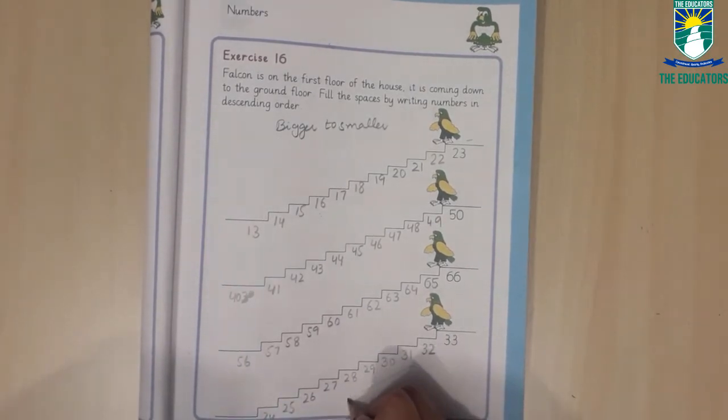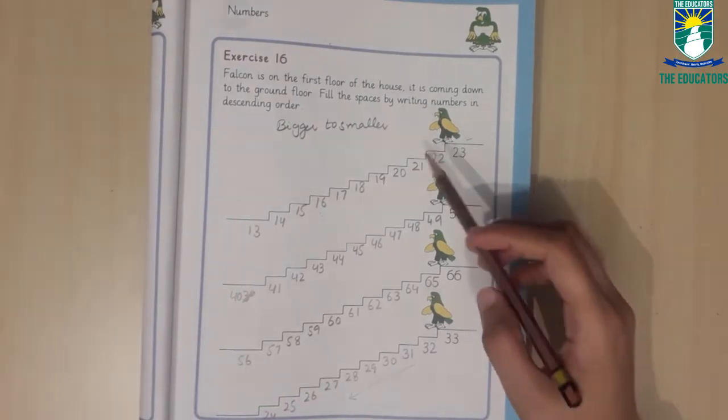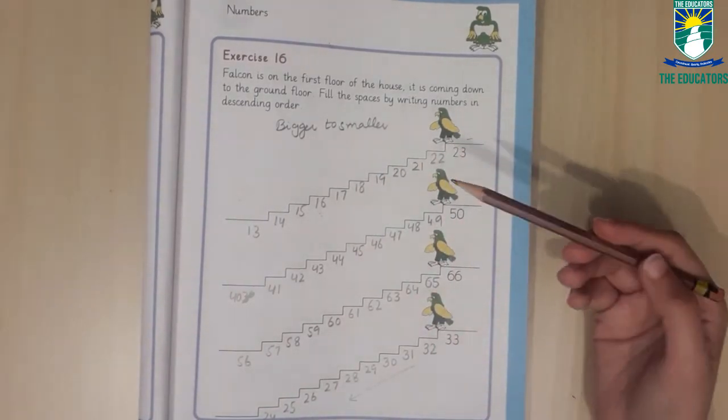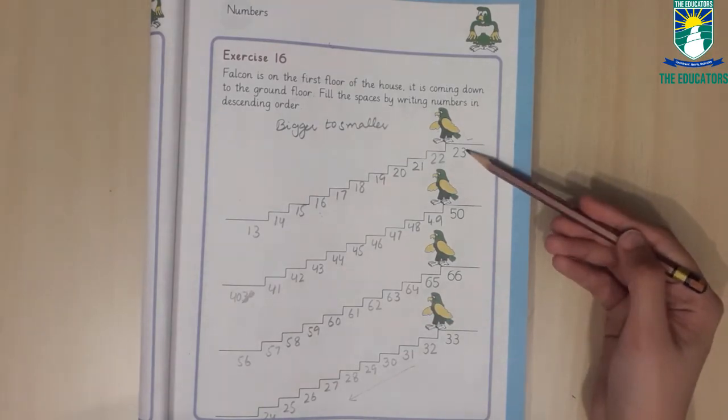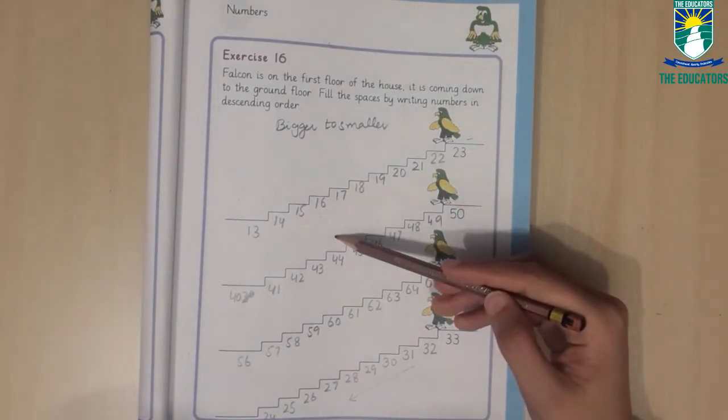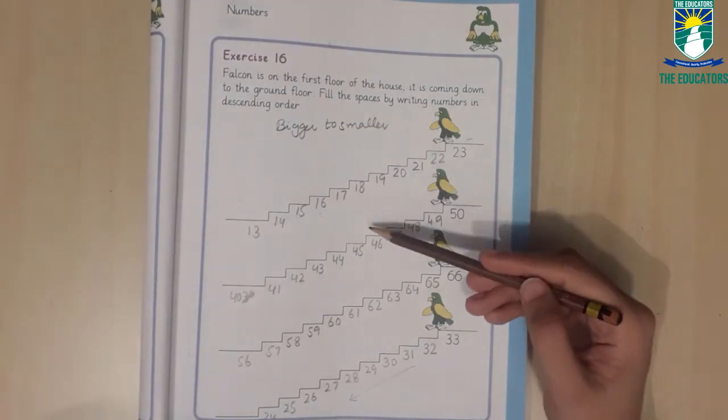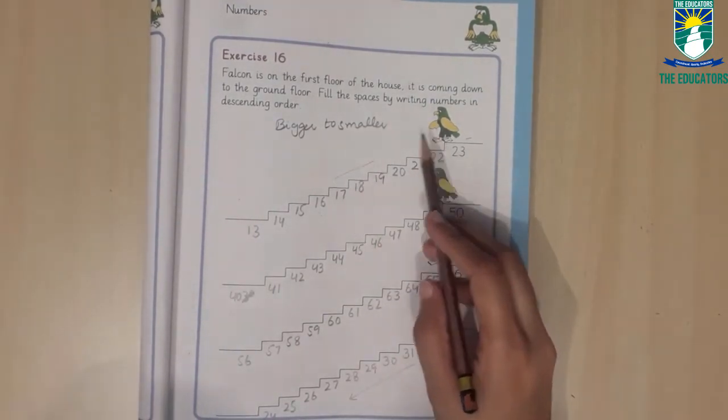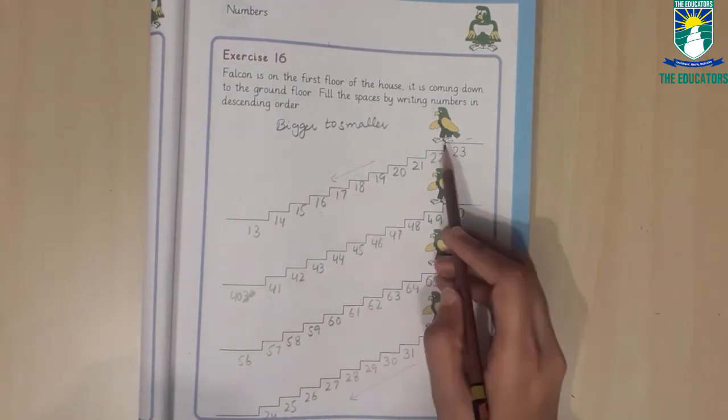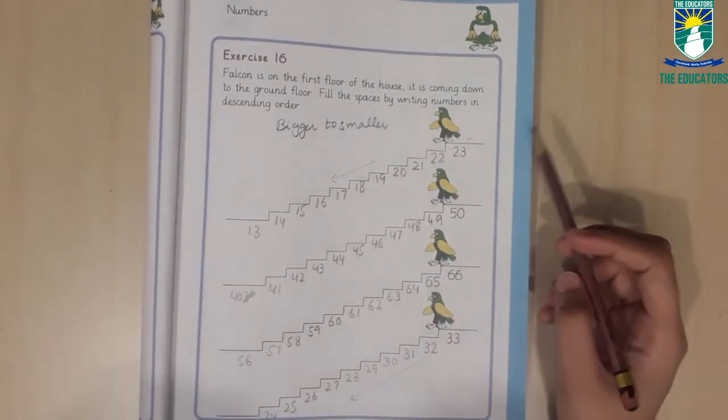I hope ki aapko samajh aa gaya hai ki hamne descending order mein number ko kis tarah se write karna hai. Theek hai, hum bigger number se start karte hain, aur smaller number ki taraf move karte hain. Uske liye hum backward counting write karte hain. Aur hum downward move kar rahe hain. Top par tha falcon, to hum down, top number se down number ki taraf aa rahe hain. Thank you.